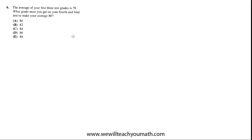The average of your first three test grades is 78. What grade must you get on your fourth and final test to make your average 80? So your situation is that you have a 78 going into the final and you want to end up with an 80 and you're trying to figure out what you need to get on the fourth test. We can assume that all the tests are weighted equally. We have no reason to believe that they're weighted differently.